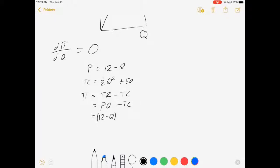minus (½Q² + 50), which is 12Q - Q² - ½Q² - 50, which is 12Q - Q² - 50.